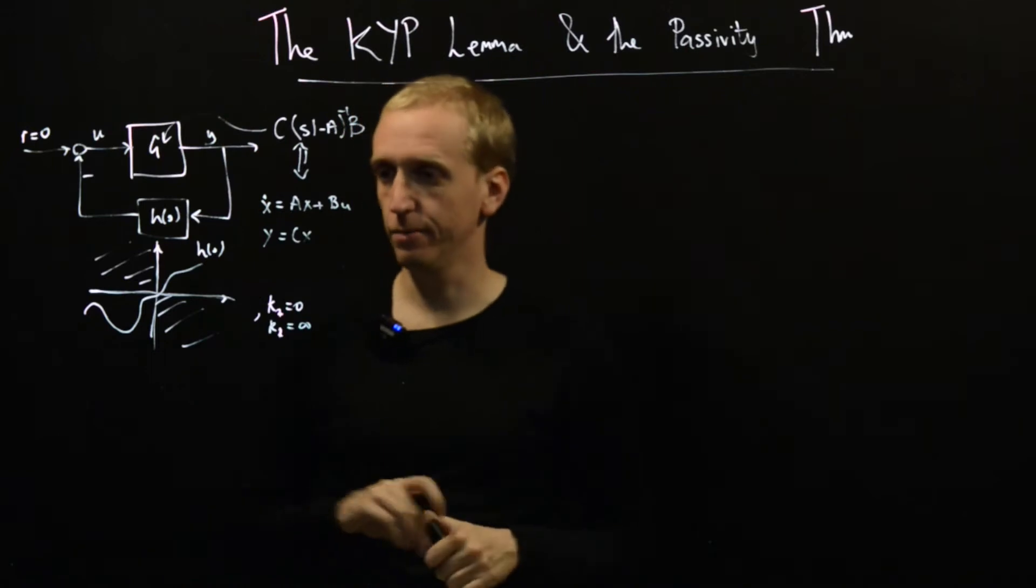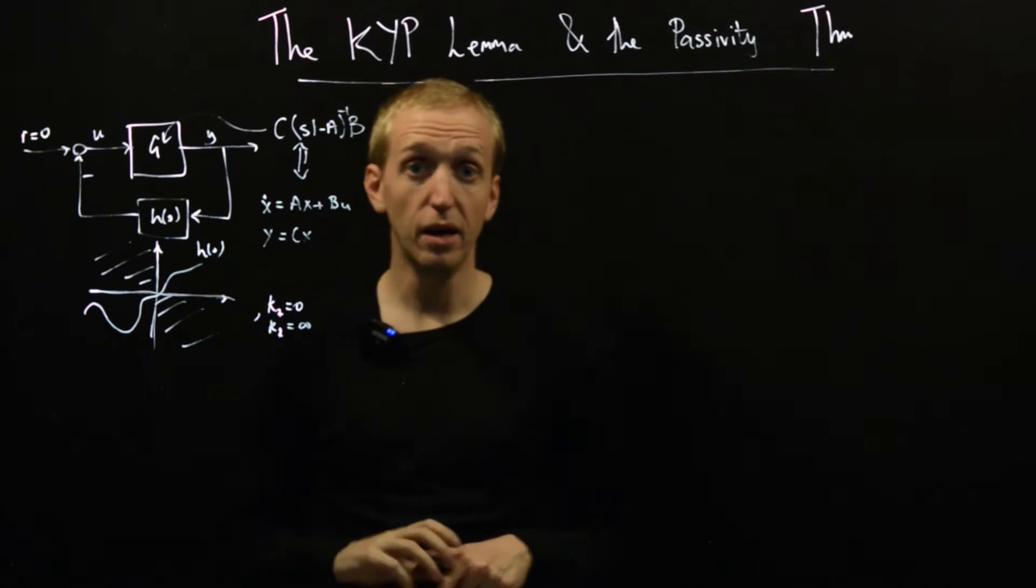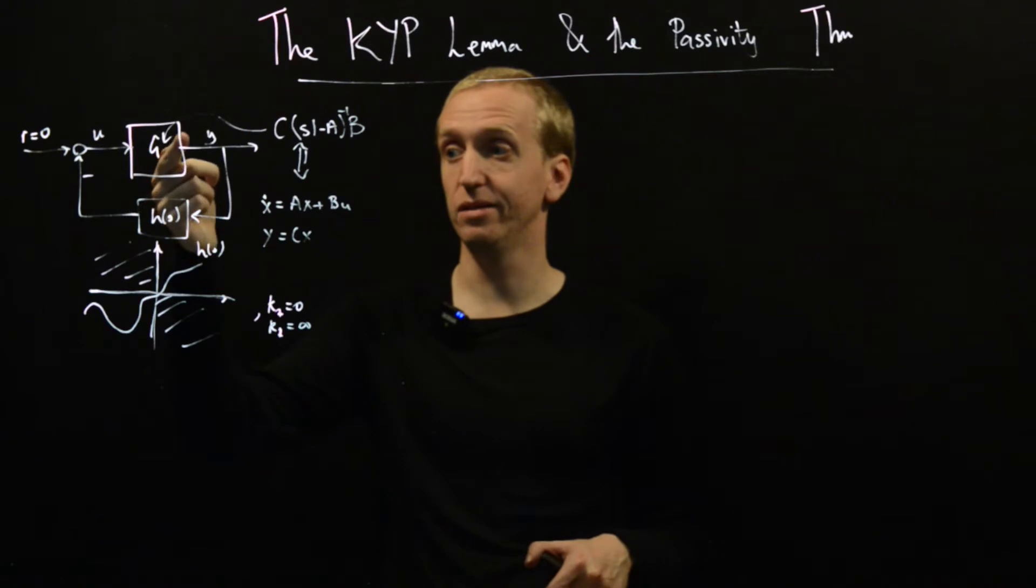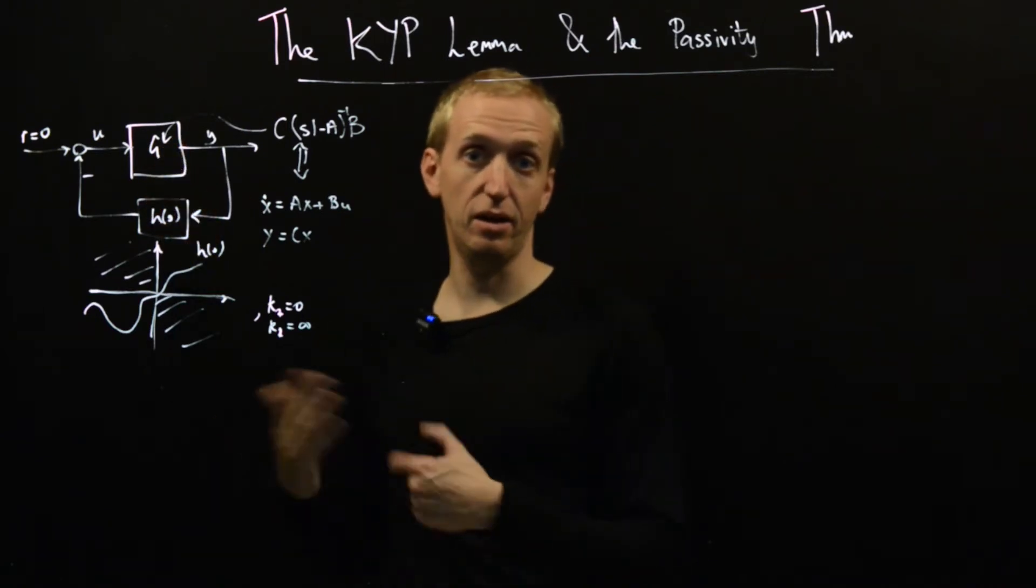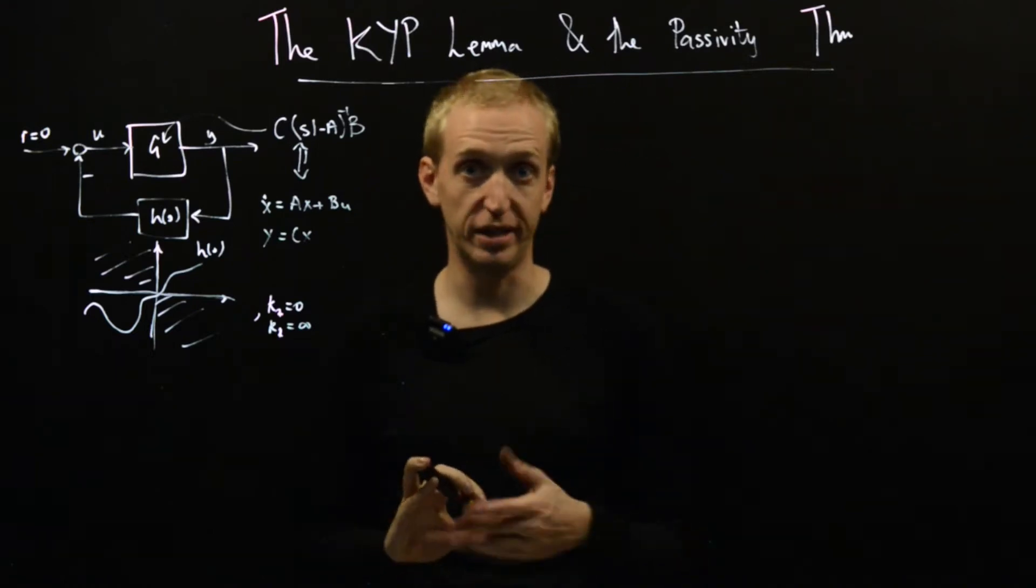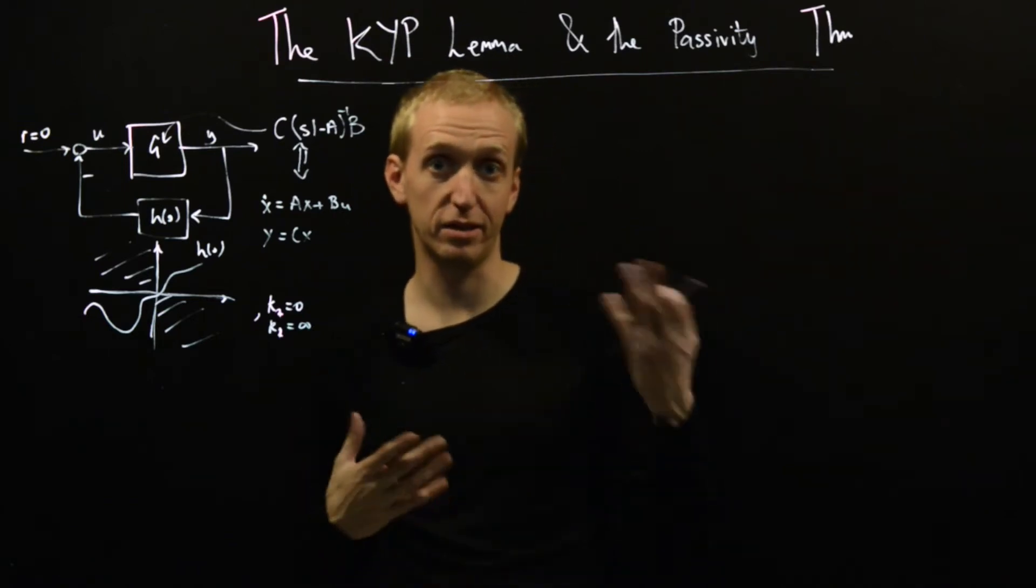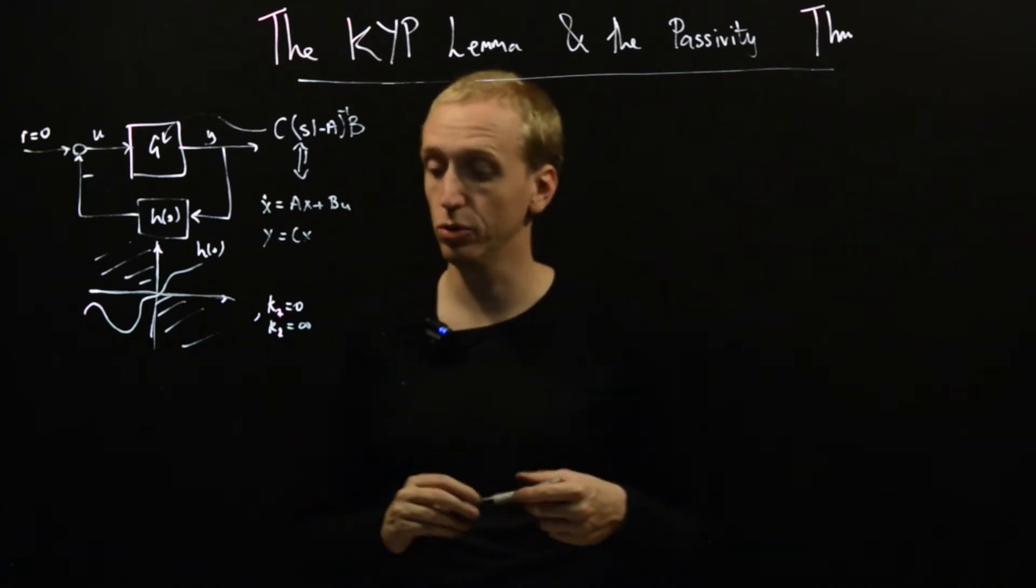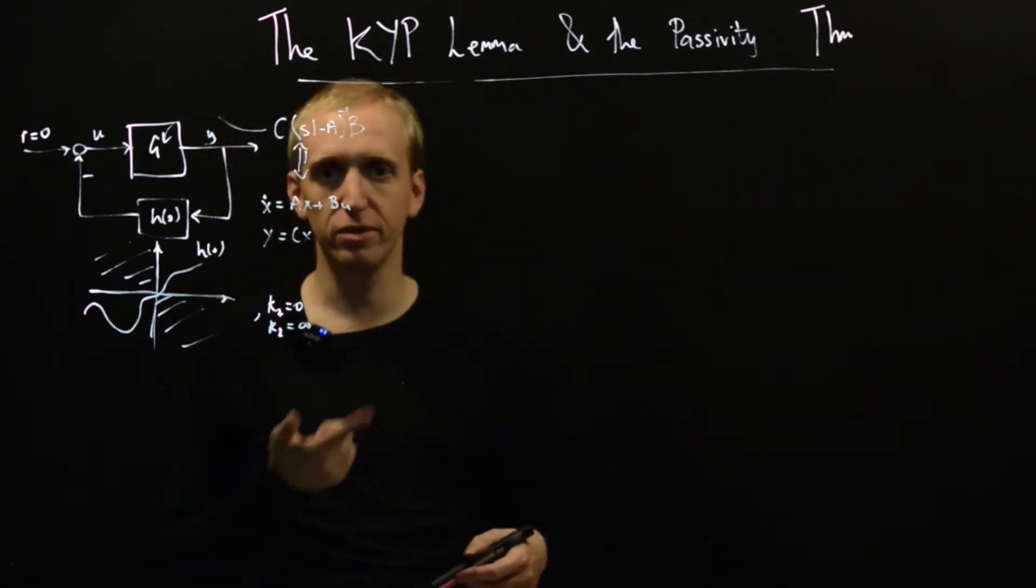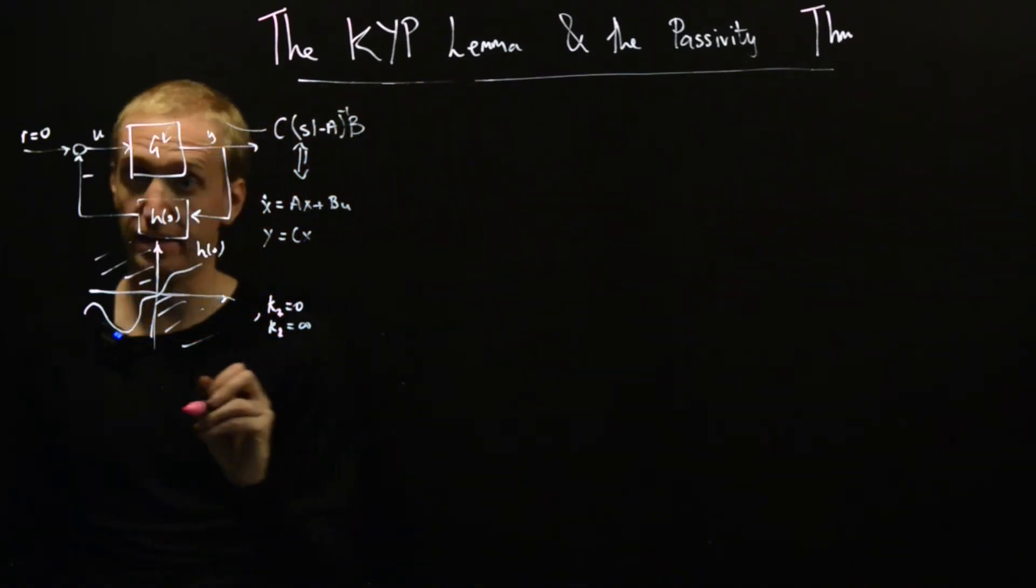We have some nonlinearity that lives in these two quadrants here. We saw last time that the circle criterion implied that we needed G to be in this class of strictly positive real functions. We're now going to tie this more formally to some of the Lyapunov-type ideas that we saw before. The key piece, which is relating all of these Lyapunov functions, strictly positive real functions and things together, is called the KYP lemma.